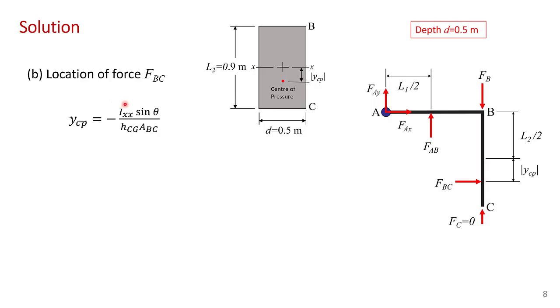Ixx is the second moment of area of the gate's surface around this horizontal axis. Theta is the angle that the vertical surface makes with the free surface, which is 90 degrees. HCG is the depth of the centroid of this surface relative to the free surface. And ABC is just the area of that surface.